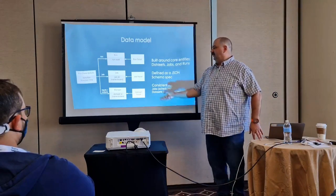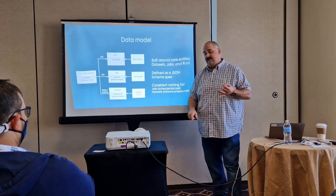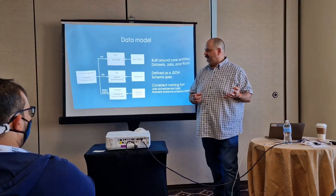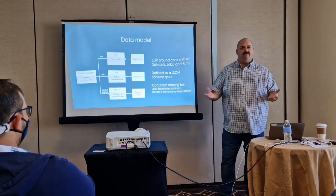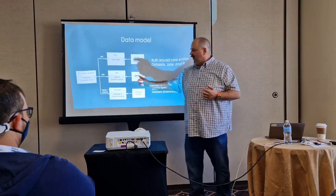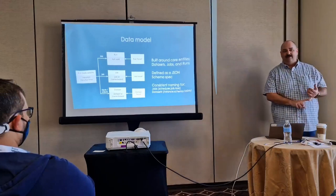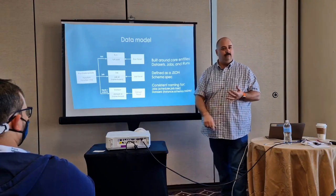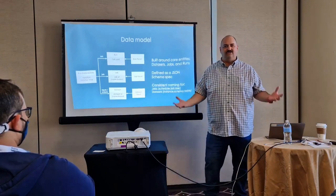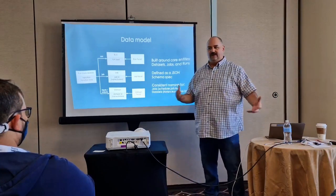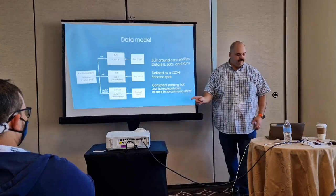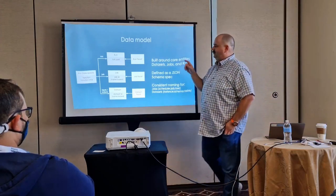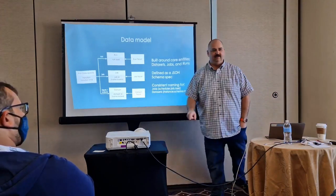Each run state update packages up three entities: the run, the job, and the data set. These are the core object model of Open Lineage. A data set roughly correlates to a table, a directory, a bucket, or a model. A job maps to an Airflow task, a Spark job, a dbt model, or a Great Expectations checkpoint. A run is an instantiation of a job — every time a job runs, you give it a new run ID. You can attach different information to the run, the job, and the data set in the form of facets.